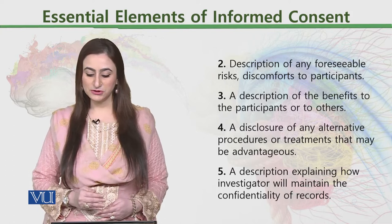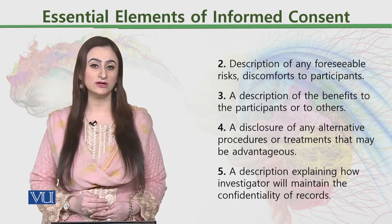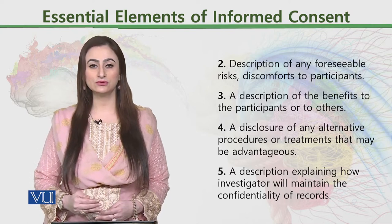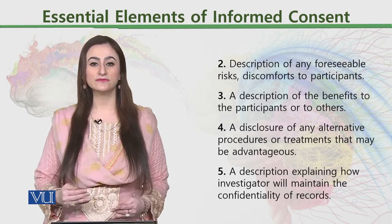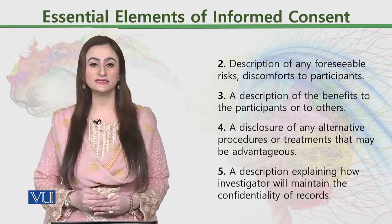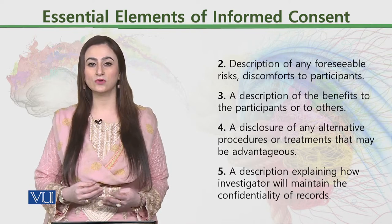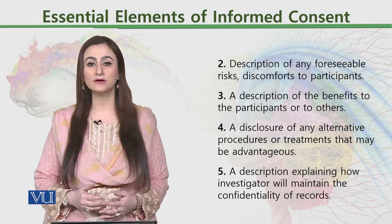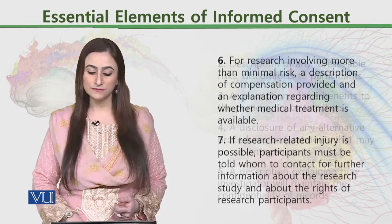Number five is a description explaining how an investigator will maintain the confidentiality of records. The process of ensuring confidentiality, which we have discussed earlier in lectures, should be explained to the participants so that they feel comfortable enough to give their consent for the research.